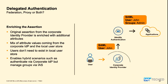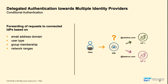We also have conditional authentication. If the landscape has more than one identity provider — for example after acquisitions or different subsidiaries using the applications — we have conditional authentication. When the user accesses the application and is redirected to identity authentication service, based on defined rules, it can delegate authentication to a different identity provider. For example, a user coming with an email from the corporate domain of company A can be redirected to company A's identity provider; company B's domain goes to company B's provider. Rules can also be based on IP range or user group, so applications can easily use more than one identity provider.